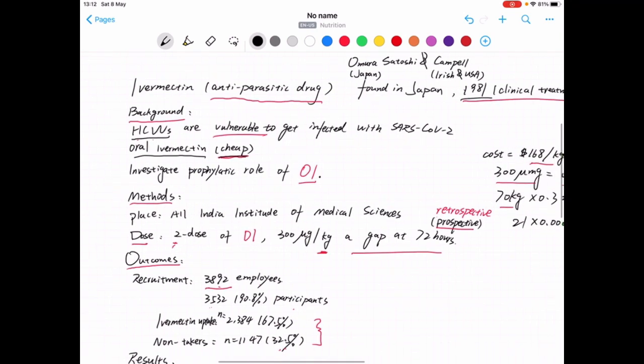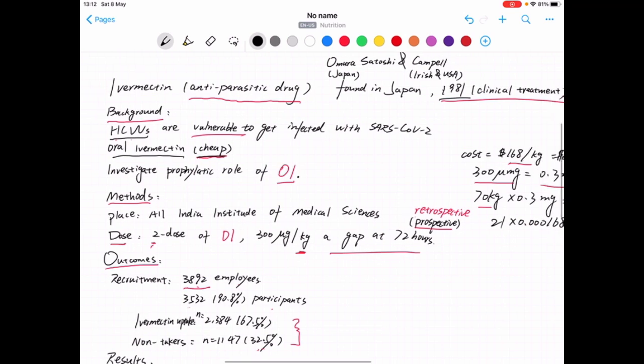In terms of the dose, it's two doses of oral Ivermectin. Every dose corresponds to 300 micrograms per kilogram of body weight, and the gap is 72 hours, which is three days approximately.